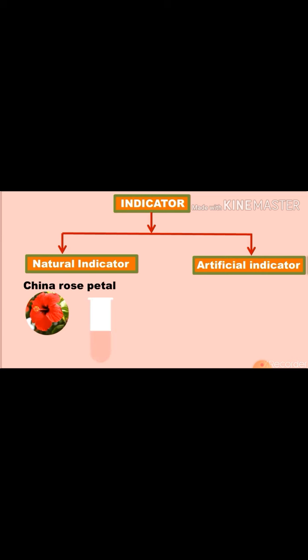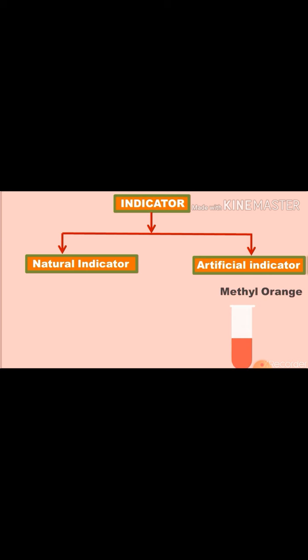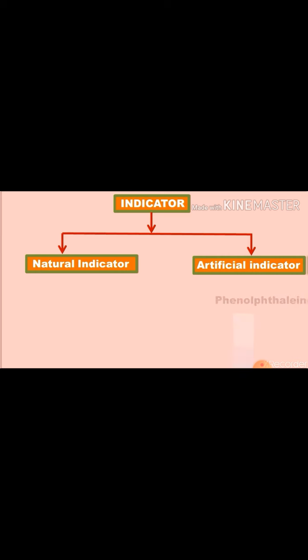Let's see some examples of artificial indicators: methyl orange and phenolphthalein. These are some artificial indicators.